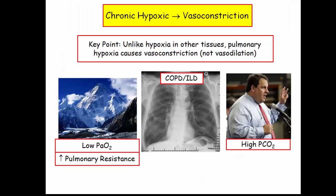Chronic hypoxia causes vasoconstriction, which is also referred to as an increase in pulmonary resistance by the NBME, especially in questions about high altitude. Although pulmonary parenchymal diseases such as COPD or interstitial lung disease can cause pulmonary hypertension, any cause of hypoxia will do it.